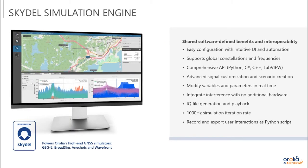That brings us to the Skydell simulation engine, which powers our GSG-8 and any other Skydell-based simulation products. Key benefits include easy configuration with the UI and automation. We support all the constellations and frequency bands for GNSS signals. We provide a comprehensive API in Python, C#, C++, and LabVIEW. We also provide not only the interface to the simulator, but a lot of examples and the whole client-side simulation as well, making it very easy to get going whether you're using the API or the GUI.